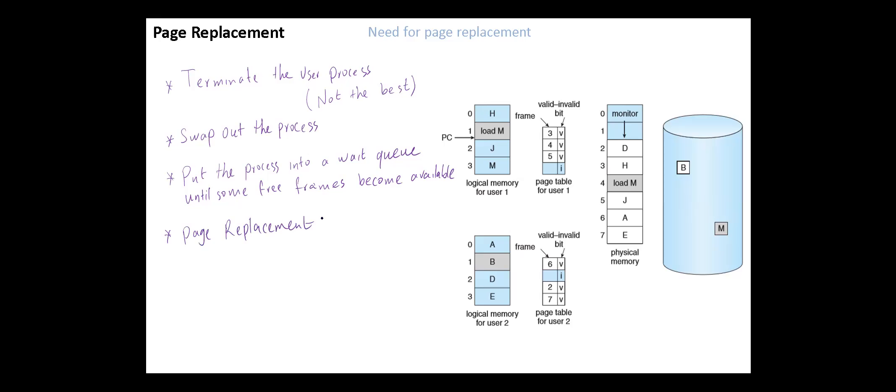The main idea is to find some page in memory and swap that page out to disk, freeing up a frame that can be allocated to the process requesting it.